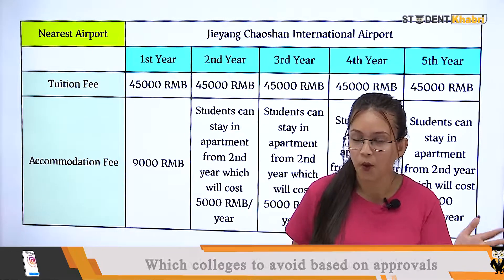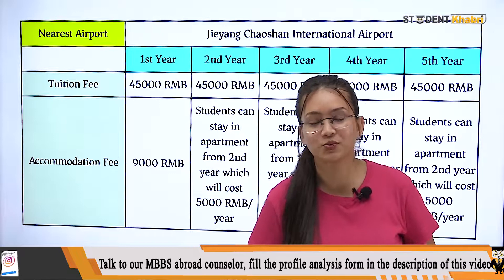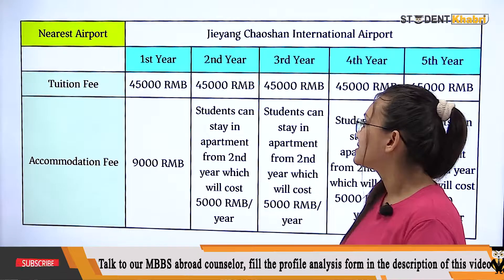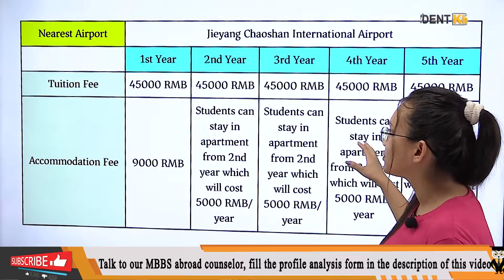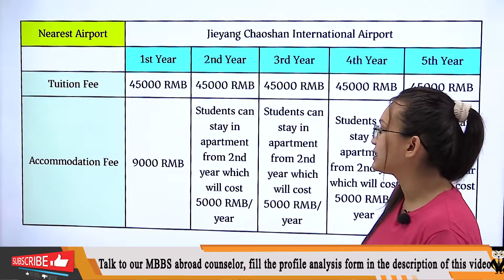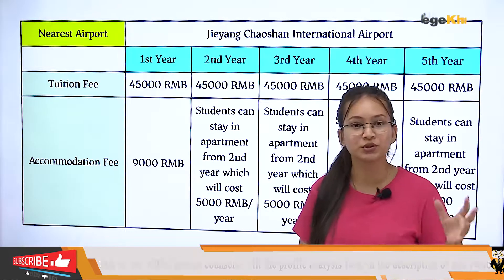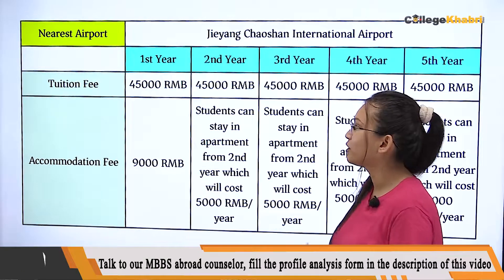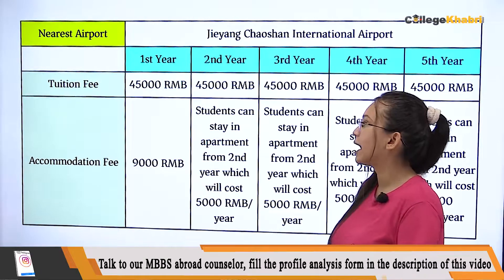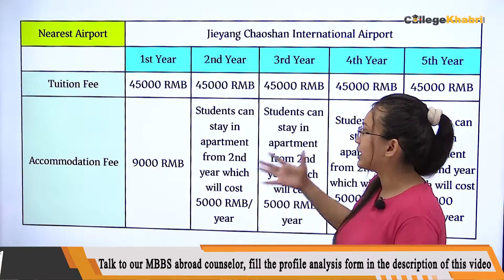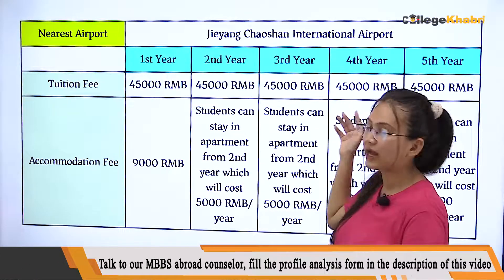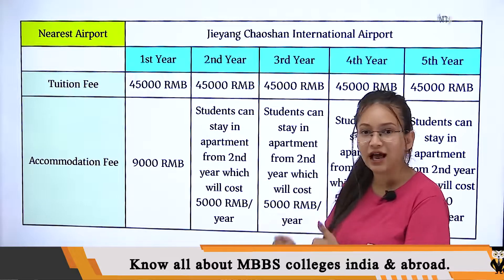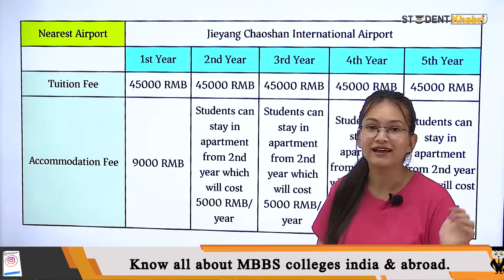So let's start with the tuition fee. In the first year you have 45,000 RMB, and in the second, third, fourth, and fifth year you also have to pay 45,000 RMB every year.